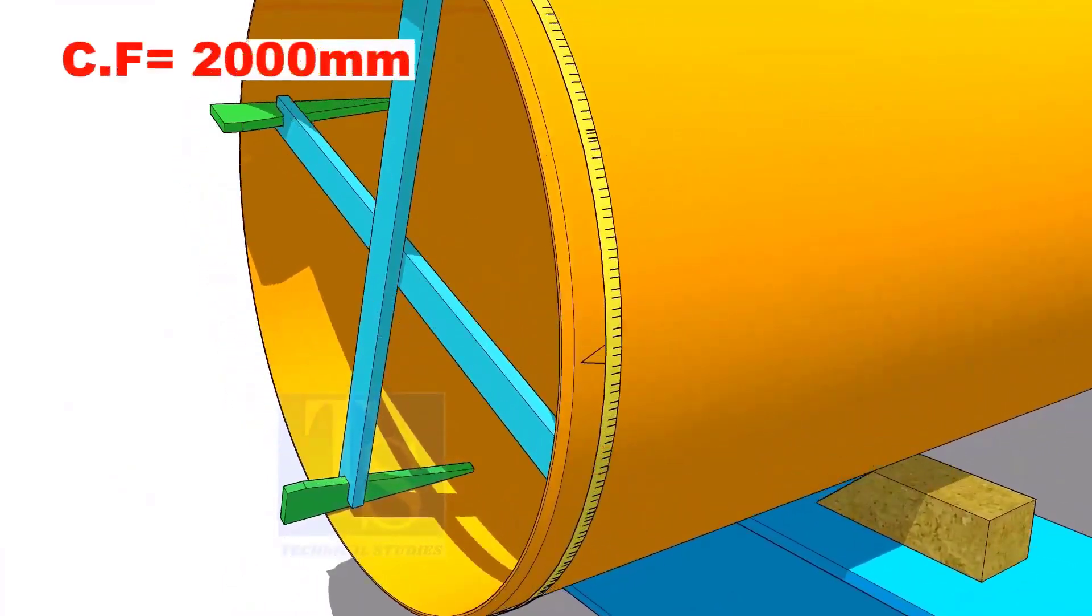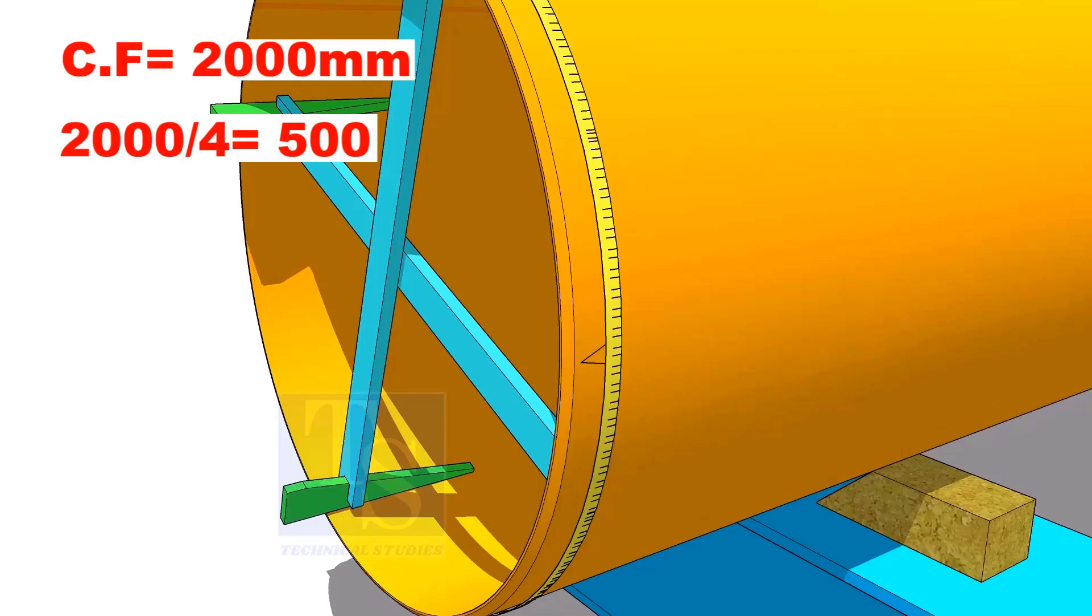Assume that the circumference is 2000 millimeters. Divide it by 4. Now, you have the arc length of 90 degrees.